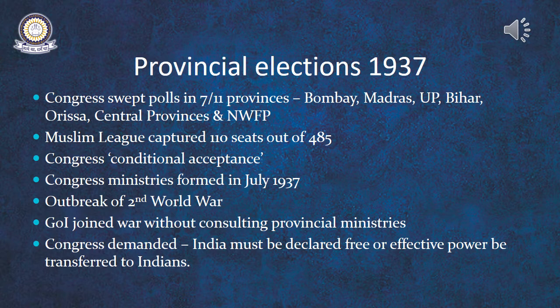The Congress swept the polls in most of the provinces. It gained majority in Bombay, Madras, UP, Bihar, Orissa, Central Provinces, and the Northwest Frontier Province. The Congress did not do well in the elections of the upper houses, as the franchise there was limited to the upper strata only.